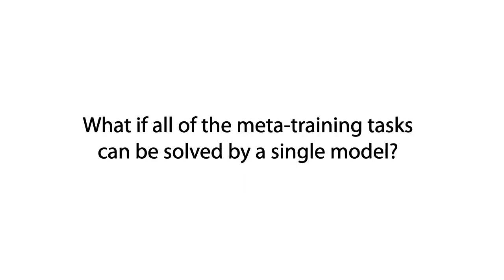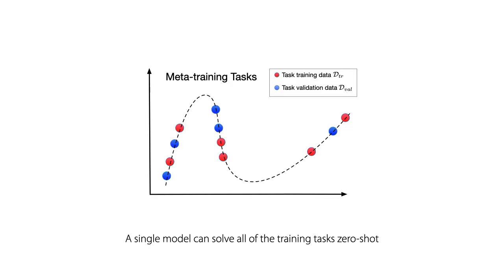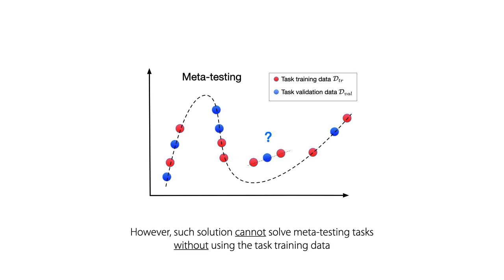We ask the question, what if all the meta-training tasks can be solved by a single model? We find if the model is flexible enough, a single model actually can solve all the training tasks without actually adapting to task training data. While this solution seems somewhat innocuous, it cannot solve meta-testing tasks without using the task training data.